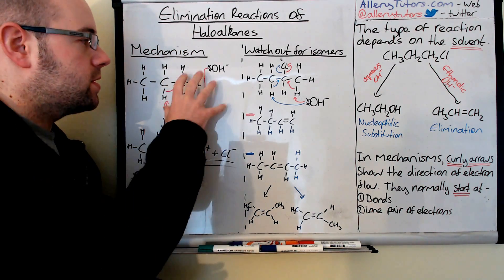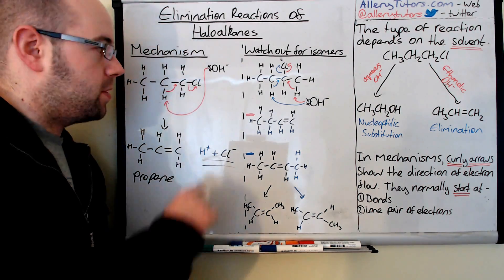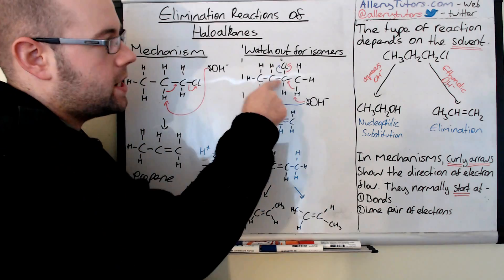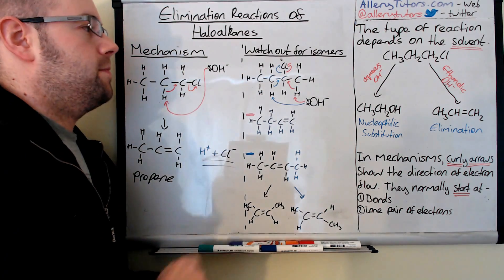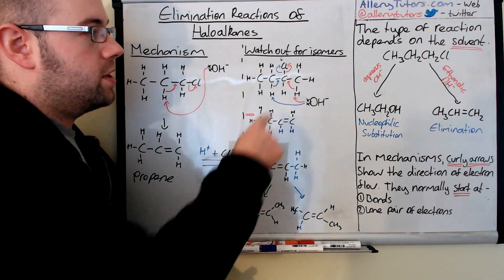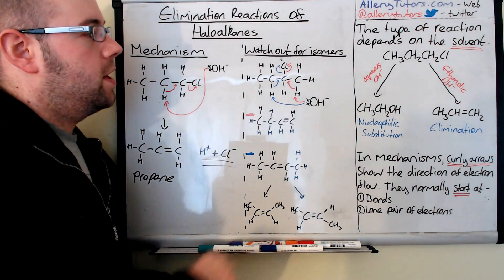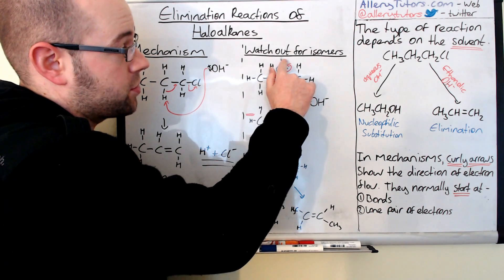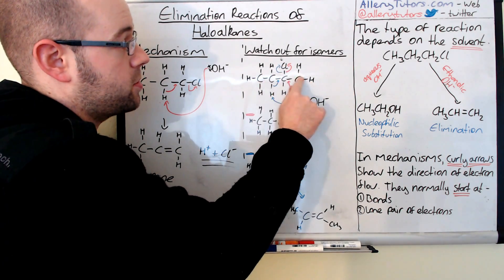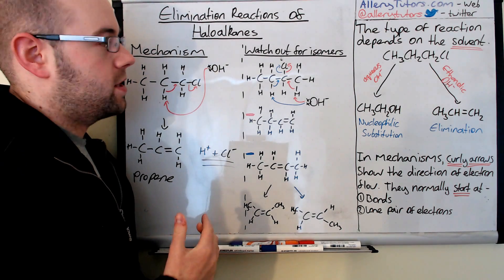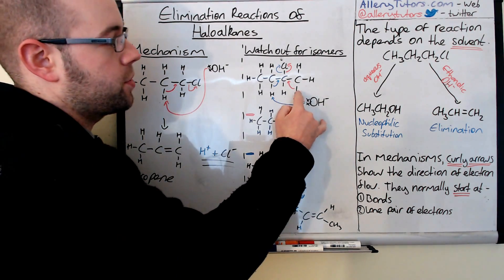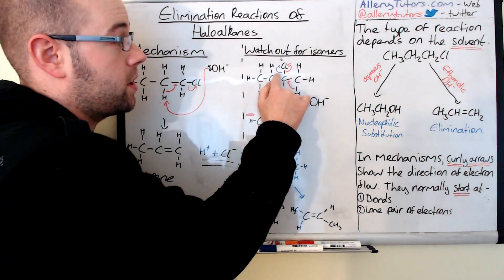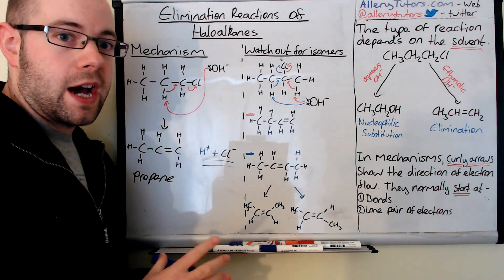We've got to watch out for isomers. With 1-chloropropane we can only get one product because the halogen is on the end carbon. But if the halogen is in the middle — for example in 2-chlorobutane, where the chlorine is on the second carbon — we've got two potential options. Looking at the adjacent carbons to the halogen-bearing carbon, the hydroxide ion could go for a hydrogen on the carbon to one side, or for a hydrogen on the carbon to the other side. This is really important because we can get isomers from this.